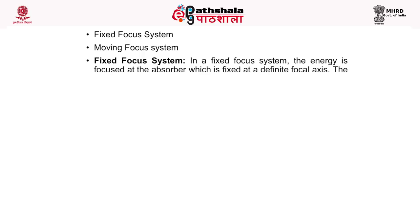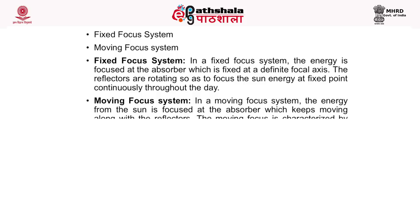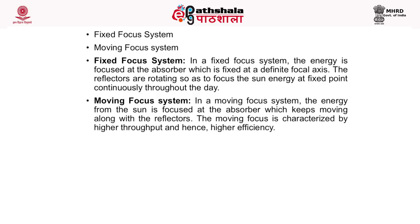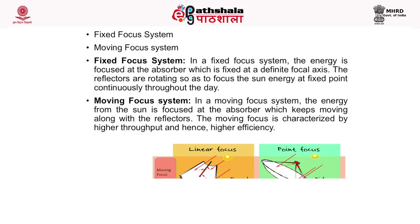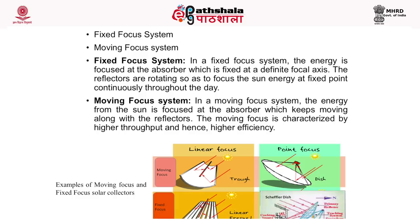Solar collectors are classified based on the movement of the absorber into fixed focus systems and moving focus systems. In a fixed focus system, the energy is focused at the absorber which is fixed at a definite focal axis; the reflectors rotate so as to focus the sun's energy at the fixed point continuously throughout the day. In a moving focus system, the energy from the sun is focused at the absorber which keeps moving along with the reflectors. The moving focus is characterized by higher throughput and hence higher efficiency. Examples of both types can be seen in the diagram.